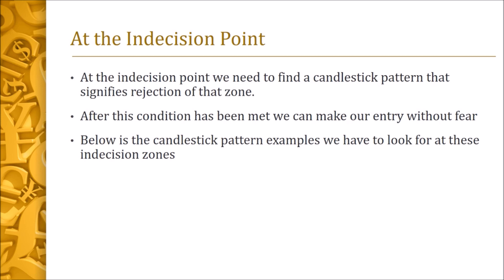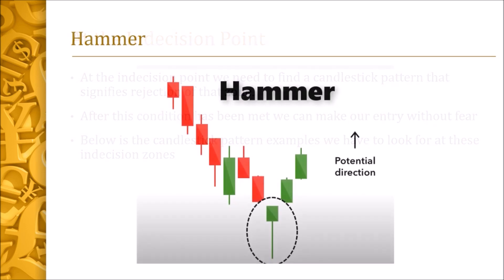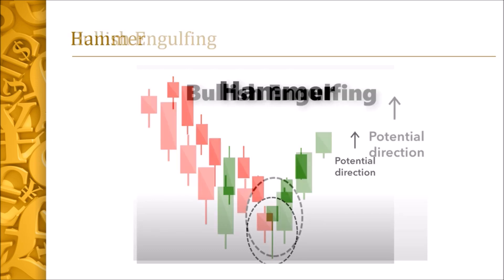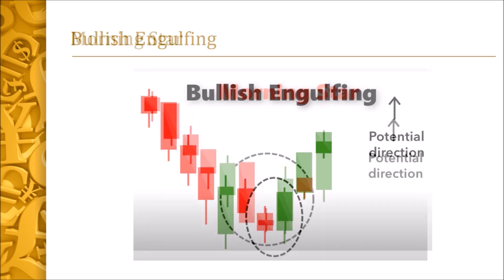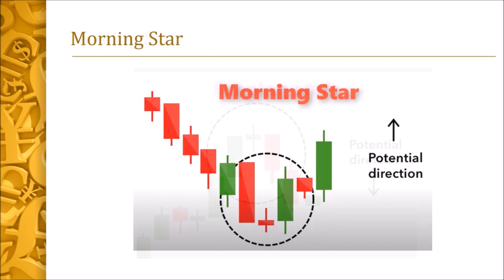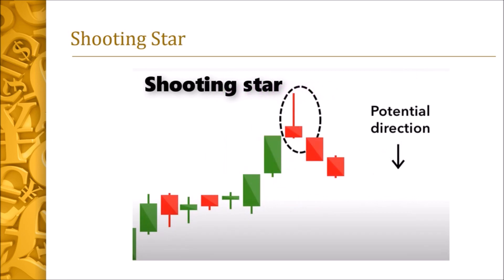At the indecision point, we need to find a candlestick reversal pattern that signifies rejection of that zone. After this condition is met, we can make our entry without fear. The candlestick patterns to look for include: the hammer, the bullish engulfing pattern, the morning star, the evening star, and the shooting star. Any of these at the indecision point is a perfect signal to make an entry.